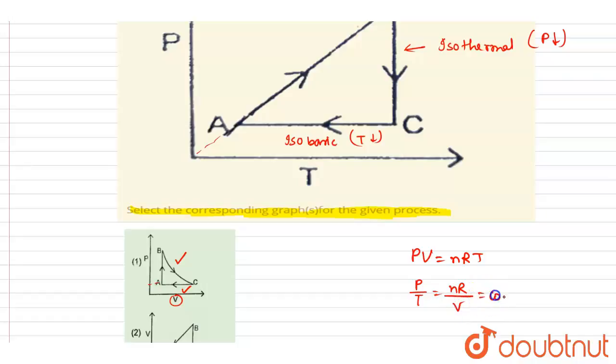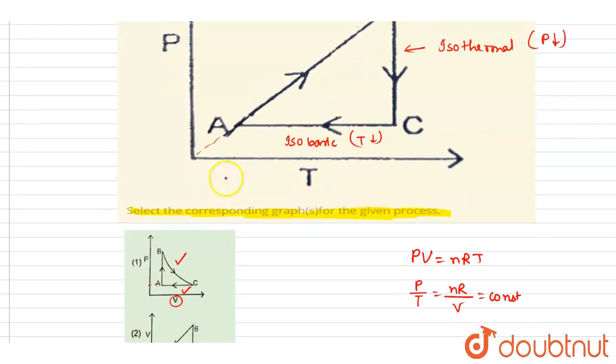A to C, temperature and the pressure is increasing and volume constant, isochoric. A to B. So A to B, volume constant with pressure increasing. So yes, the only possible option is one.